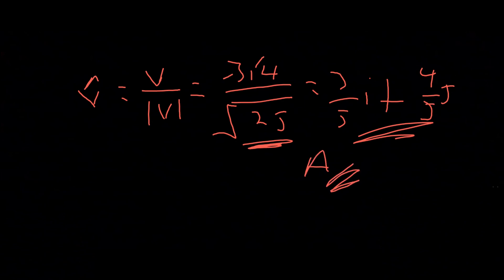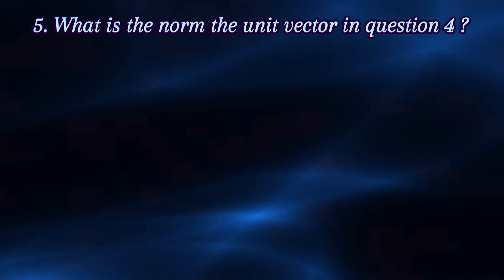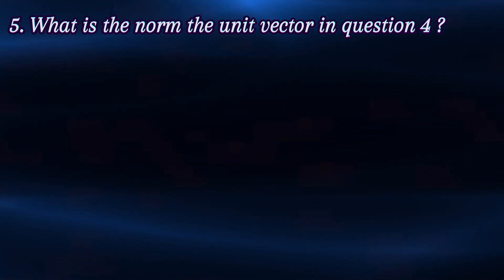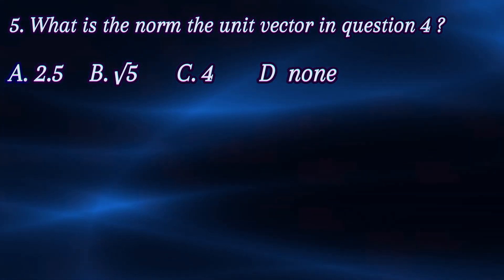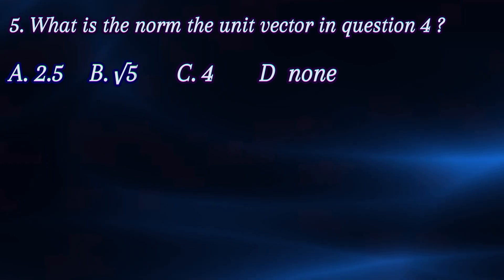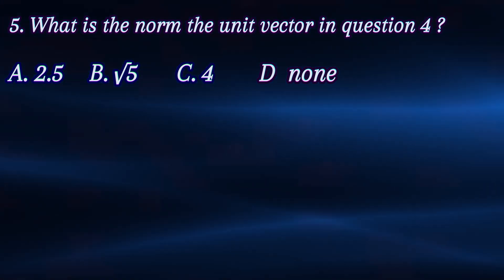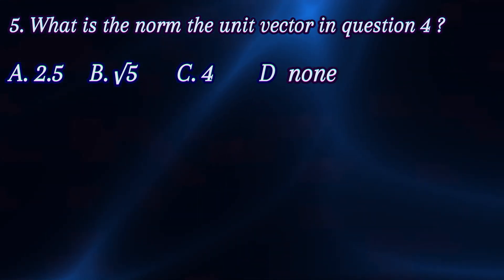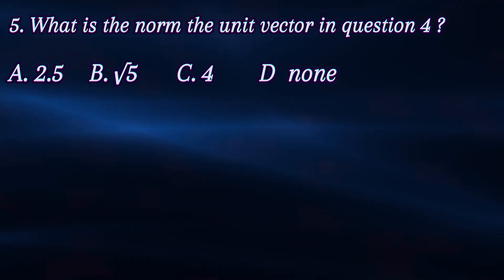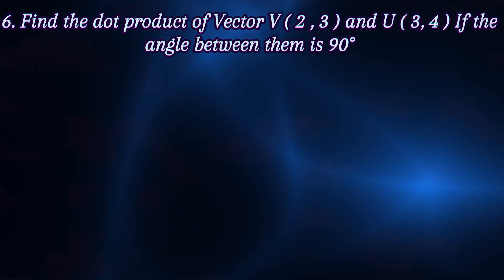What is the norm of the unit vector 3 over 5 i plus 4 over 5 j? Answer choices: a) 2.5, b) radical 5, c) 4, d) 1. We can see that 3/5 squared plus 4/5 squared equals 9/25 plus 16/25 equals 25/25 equals 1. So the magnitude of a unit vector is always 1.